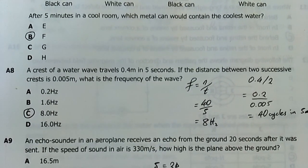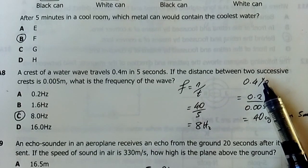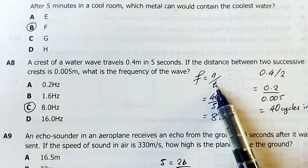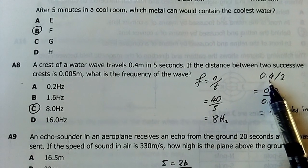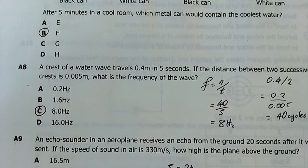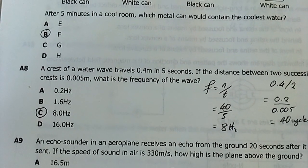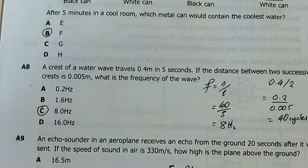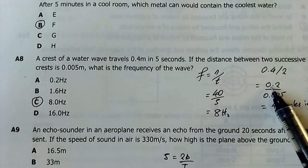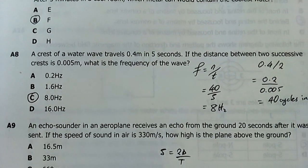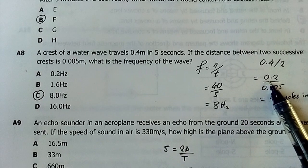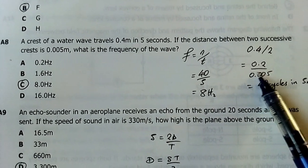Number eight: A crest of a water wave travels 0.4 meters in five seconds. If the distance between two successive crests is 0.05 meters, what is the frequency of the wave? Frequency is number of cycles over time. We've been told that one crest travels 0.5 meters in five seconds. If you include the trough which is the other half, because one cycle is made up of one crest and one trough, if you include the other half it means this distance will halve, it will become 0.2. That is why I divided here, because I'm considering a complete cycle.